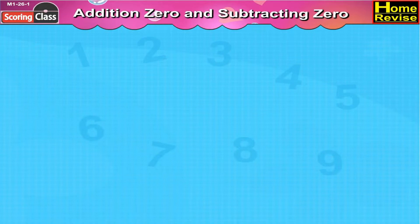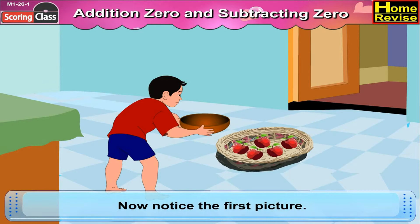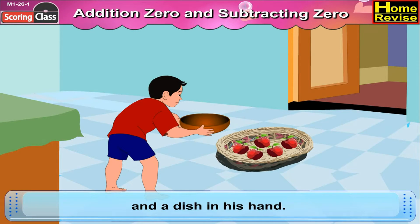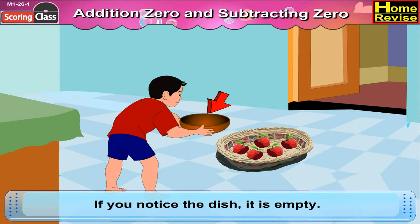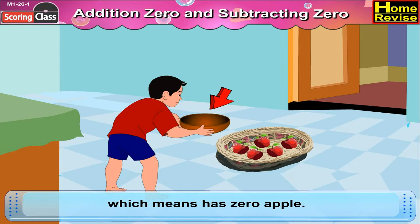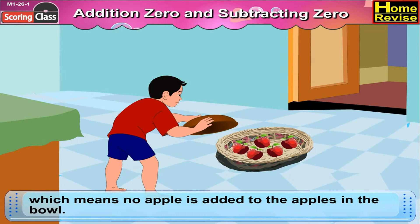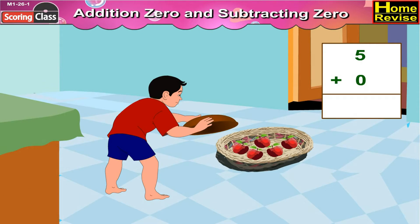Adding zero and subtracting zero. If you notice the first picture, Suhail has a bowl full of five apples near his leg and a dish in his hand. If you notice the dish, it is empty, which means it has zero apples. He empties the empty dish into the bowl, so no apple is added to the apples in the bowl. It means five plus zero, and five plus zero is five.